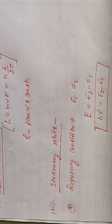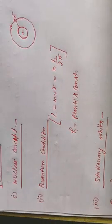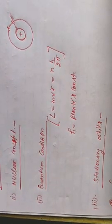Bohr ने Rutherford के atomic model की study की, Planck की quantum theory का use किया, और फिर Bohr ने ये चार postulates दीं — nuclear concept, quantization condition, stationary orbit का concept, और frequency condition।